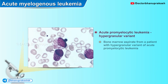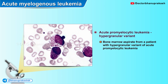Here is a bone marrow aspirate from a patient with the hypergranular variant of acute promyelocytic leukemia. The cells in the top center and far left both contain numerous intertwining Auer rods, which are distinctly seen here.